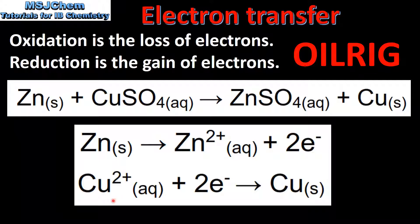The aqueous copper 2+ ions are gaining two electrons to form copper metal. This is gain of electrons, therefore the copper 2+ ions are being reduced.